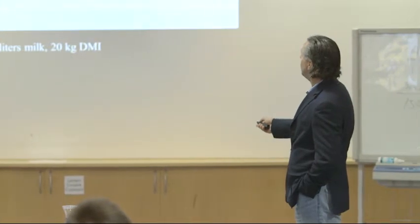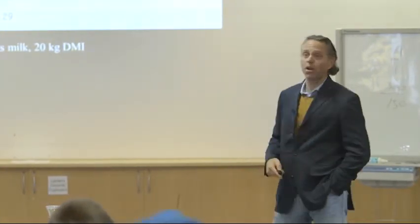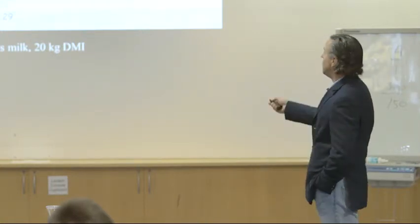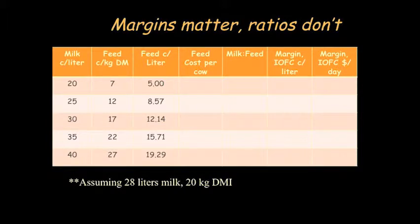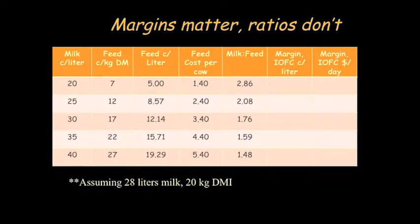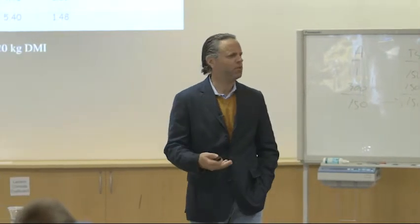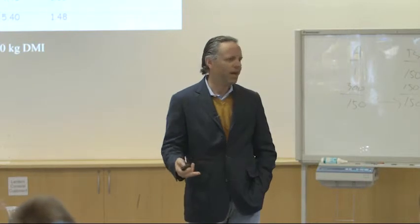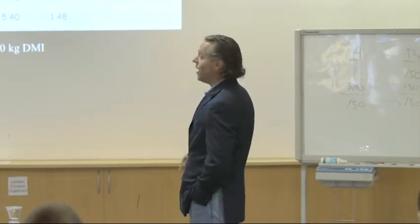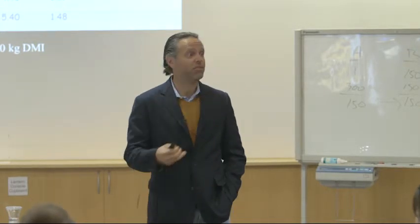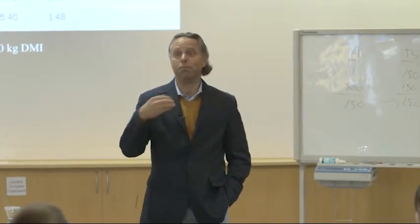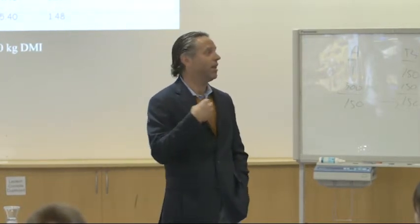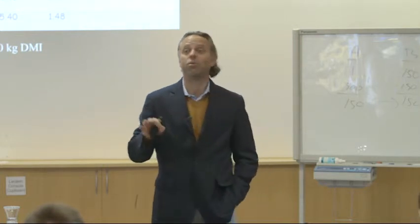Our first ratio is feed cost per liter. As we get higher feed and milk prices, our feed cost per liter just climbs. Feed cost per cow does the same thing. The milk-to-feed ratio is one that my country loves to produce — our government calculates this every month. If you ever read any U.S. dairy magazines, you'll see the USDA milk-feed price ratio published monthly. It's completely asinine, but they do it every month and consider it an economic barometer of how healthy our dairy industry is. It's completely backwards.